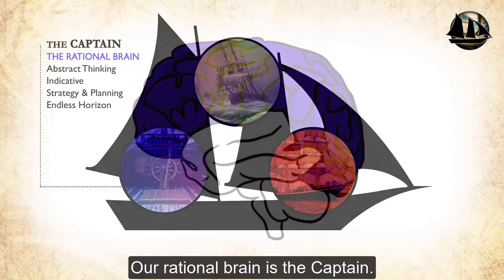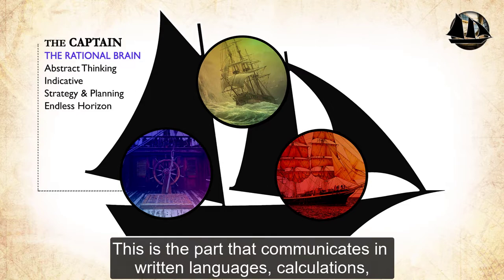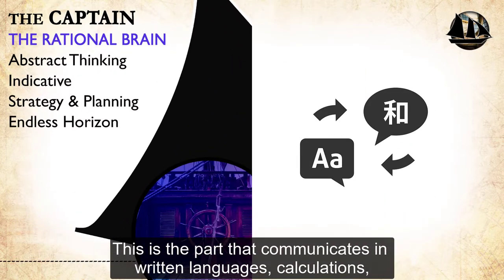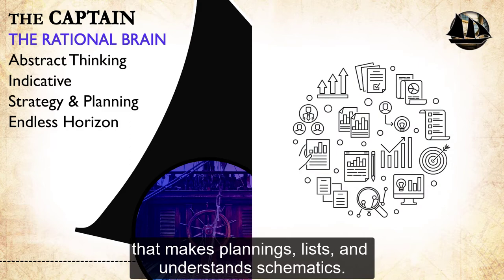Our rational brain is the captain. This part of us is logical and analytical. This is the part that communicates in written language, calculations, that makes planning, lists, and understands schematics.